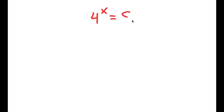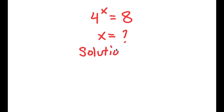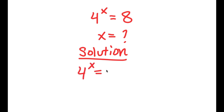In this problem, I have 4 to the power of x is equal to 8, and I want to find the value of x. For my solution, I'll start by rewriting the problem: 4 to the power of x is equal to 8.